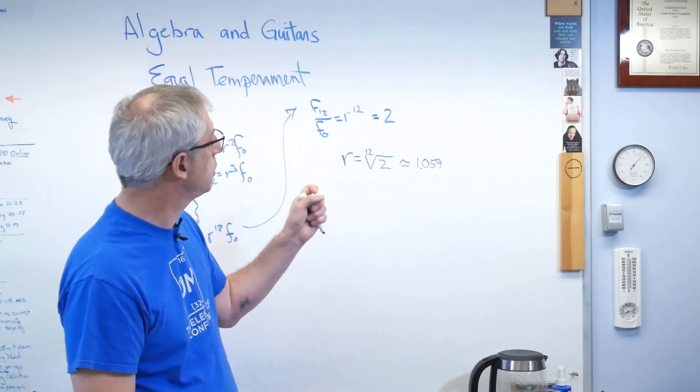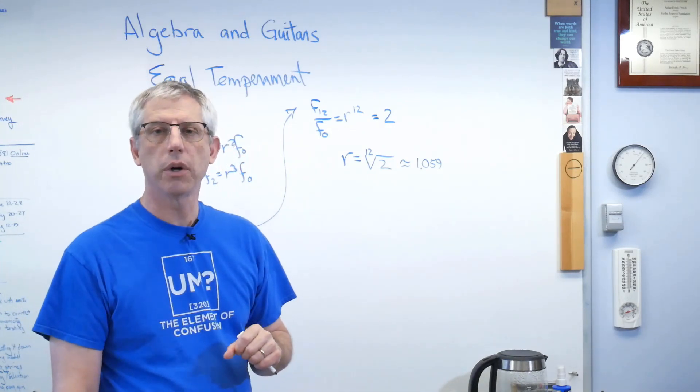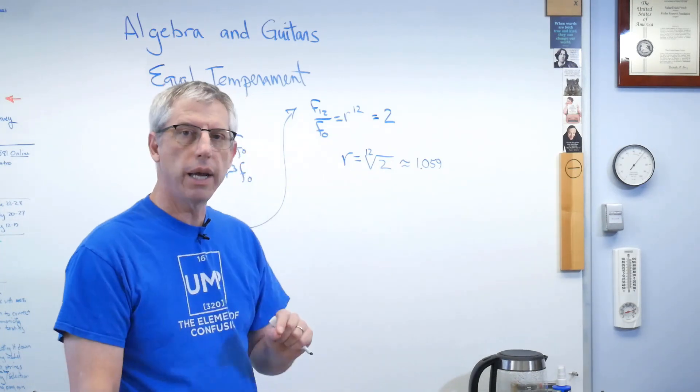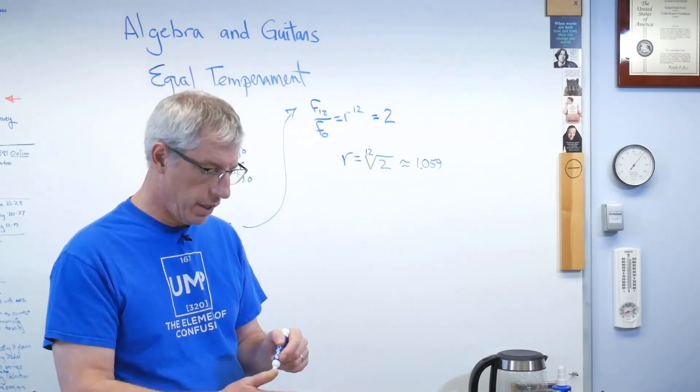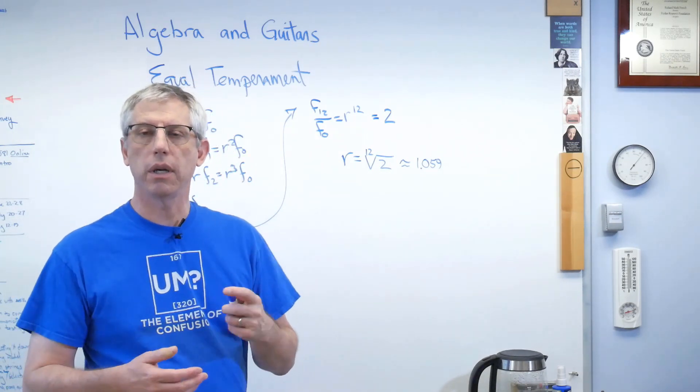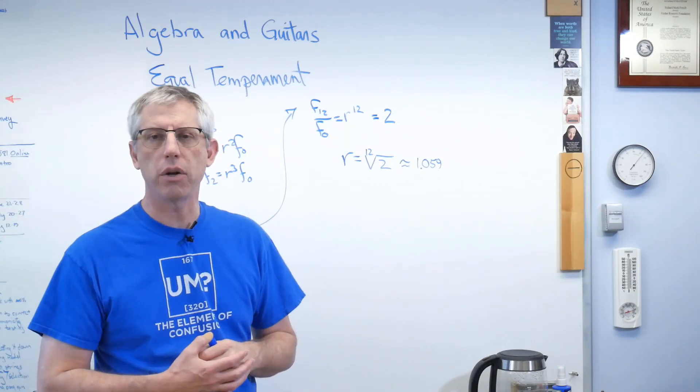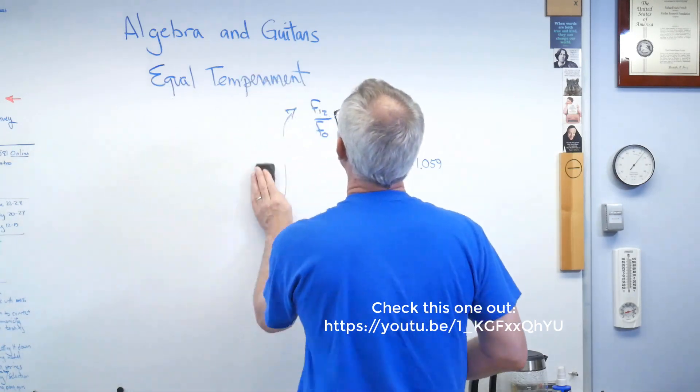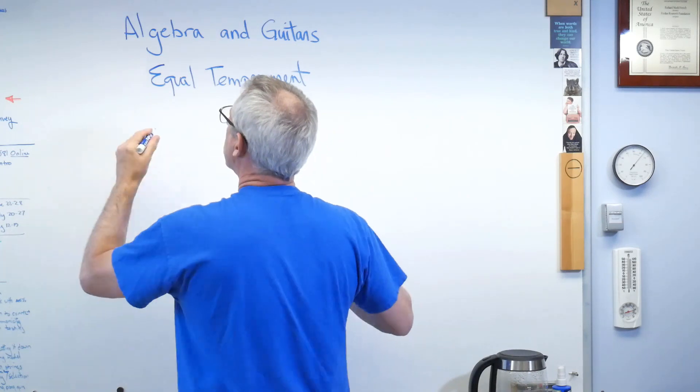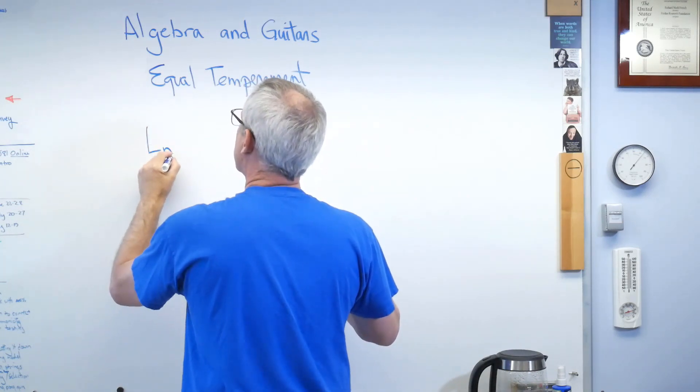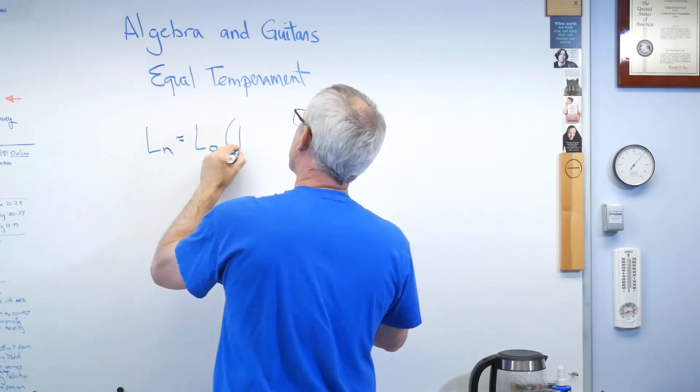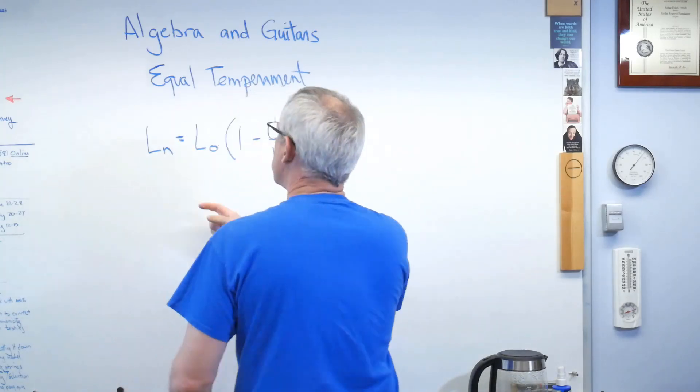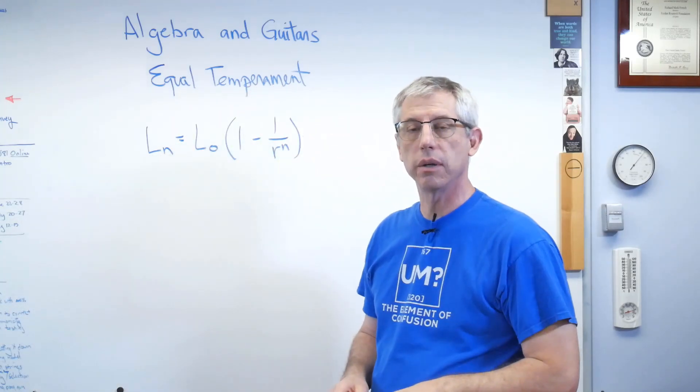It turns out, the frequency of a note is inversely proportional to the length of the string. So, the shorter the string is, the higher the note is. That means, I can now write down an algebraic expression for the length of the string. Now, there are other videos on my channel here describing in more detail how to do that. So, let me just cut to the end here and erase this stuff.